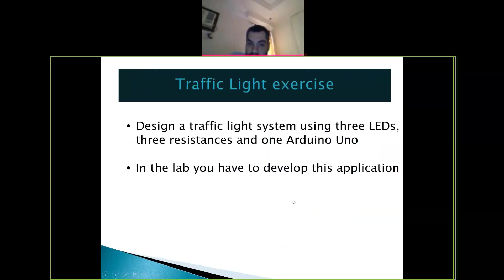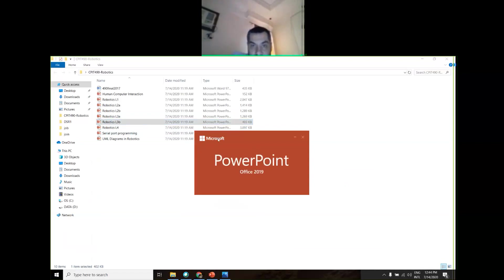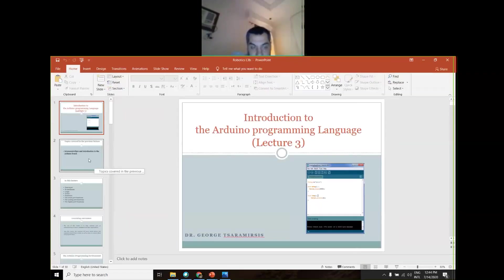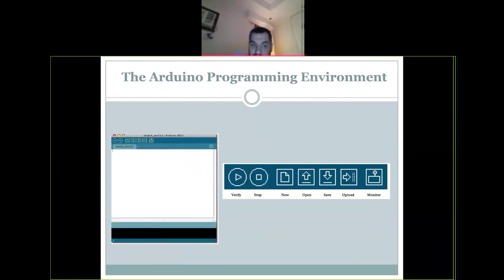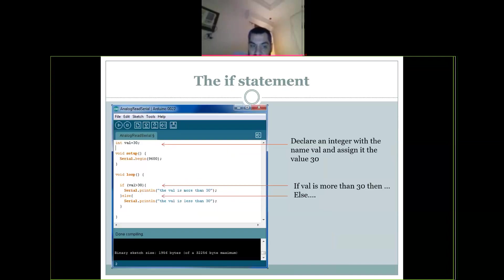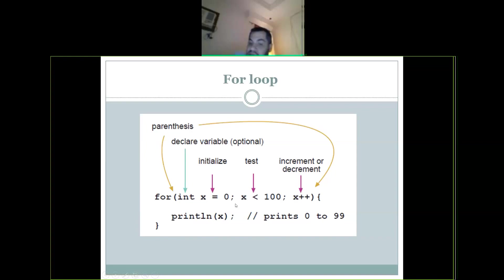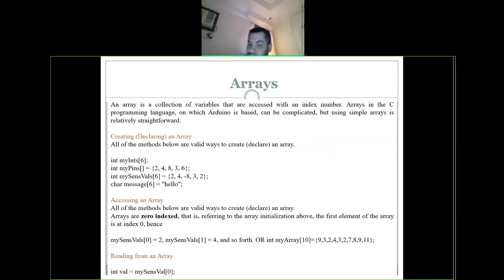We can see more coding examples in the next slides. The syntax for if statements, for loops — all completely standard. For example: if a variable is more than 30, send this number to serial; else, send a different number. A for loop is exactly as you already know it.